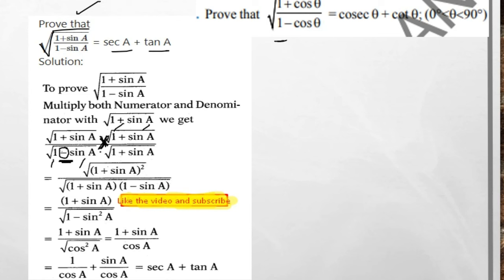The denominator has (1 − sin θ) and we multiply by (1 + sin θ), which gives (1 − sin θ)(1 + sin θ) = 1 − sin²θ using the a² − b² formula. The numerator becomes (1 + sin θ)². Under the root, (1 + sin θ)²/(1 − sin²θ). Since 1 − sin²θ = cos²θ, the square root cancels, giving (1 + sin θ)/cos θ.